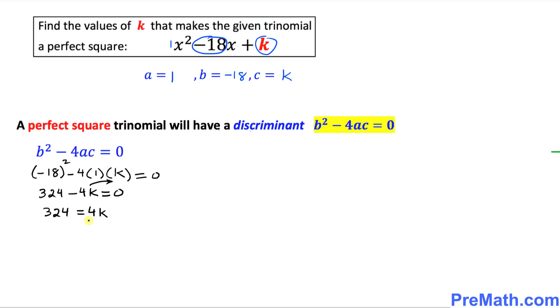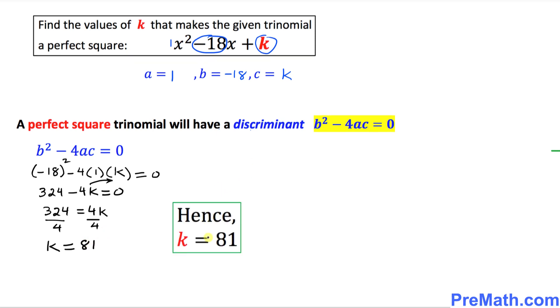Let's divide both sides by 4. So that means k value turns out to be 81. Thus our k value turns out to be 81 and that is our answer.